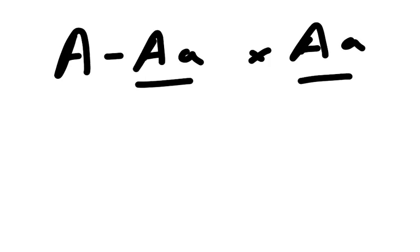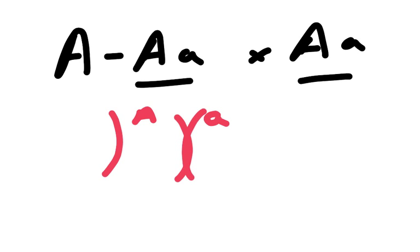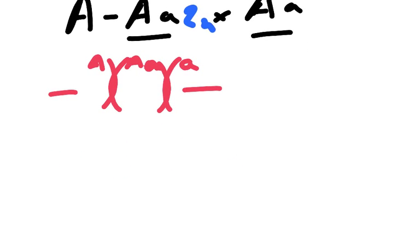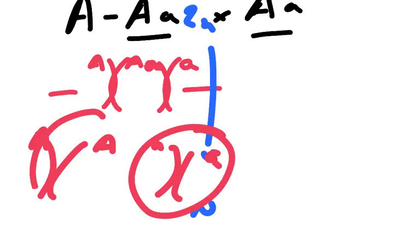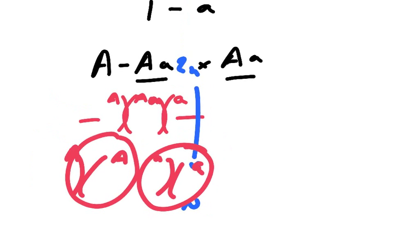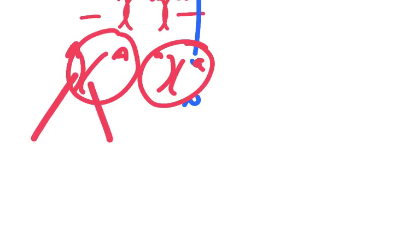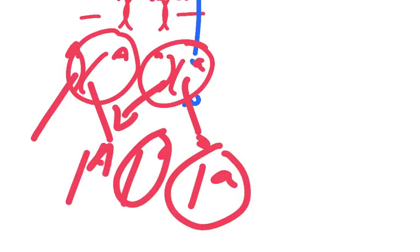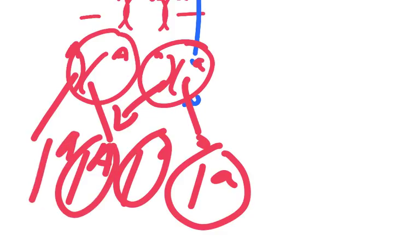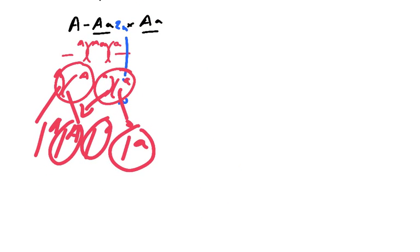Meiosis involves taking that chromosome and that chromosome, copying it, then they line up in metaphase, then they get pulled apart. In meiosis, it's all about taking a 2N cell and turning it into an N cell. These are going to get pulled apart, giving us chromosomes in two separate haploid cells. Then these two get pulled apart in the second stage of meiosis, producing a chromosome with the little a allele, another with a little a allele, a chromosome with a big A allele, and another with a big A allele.